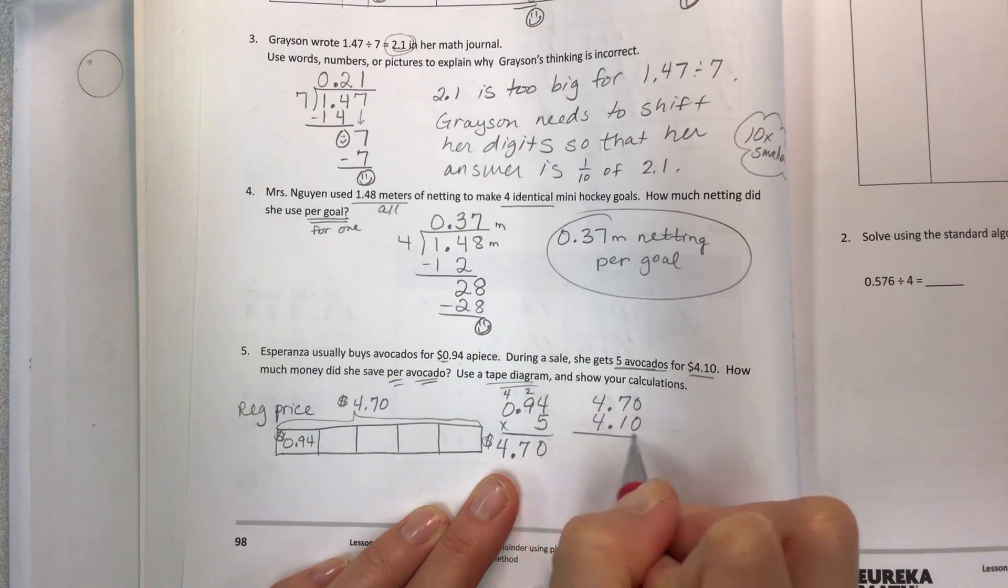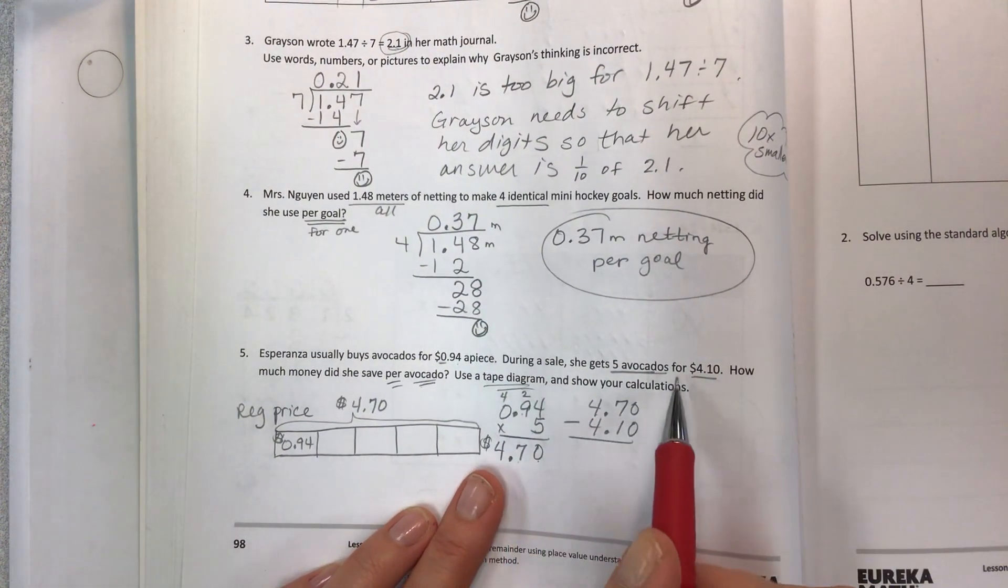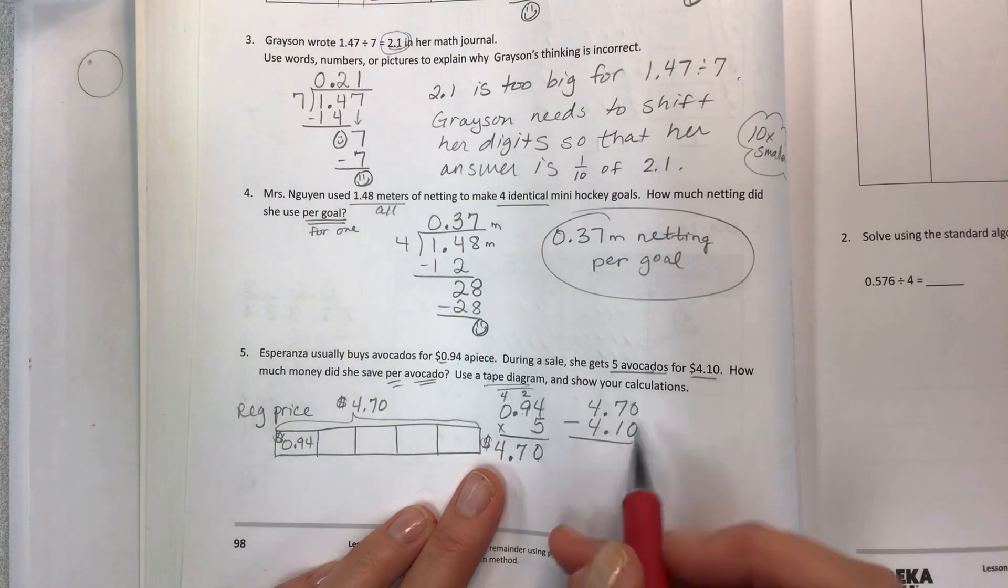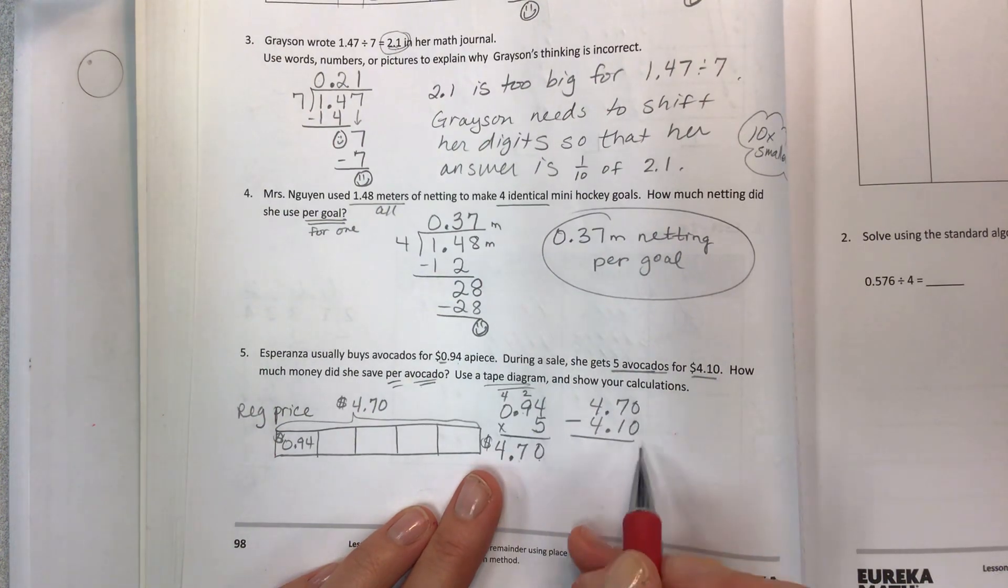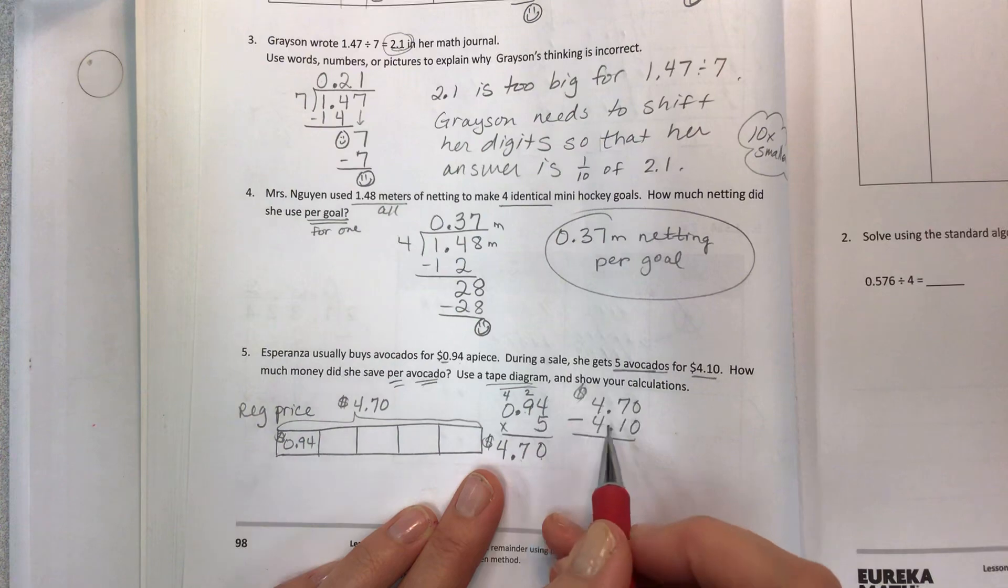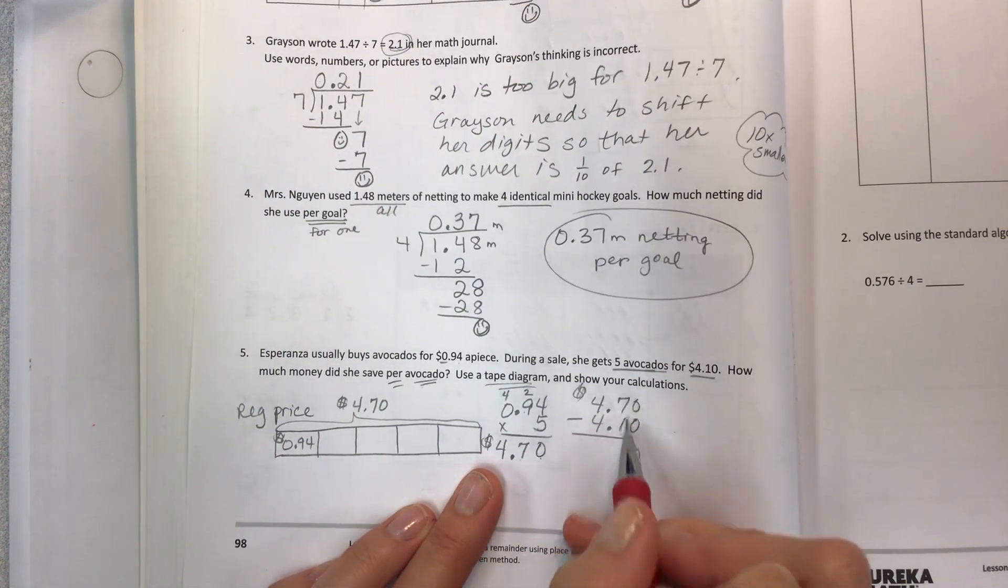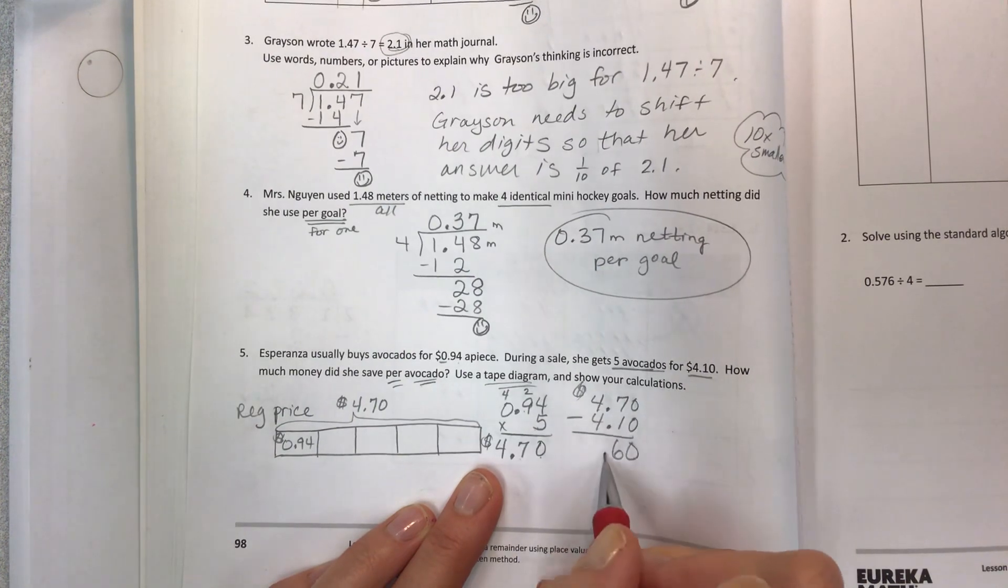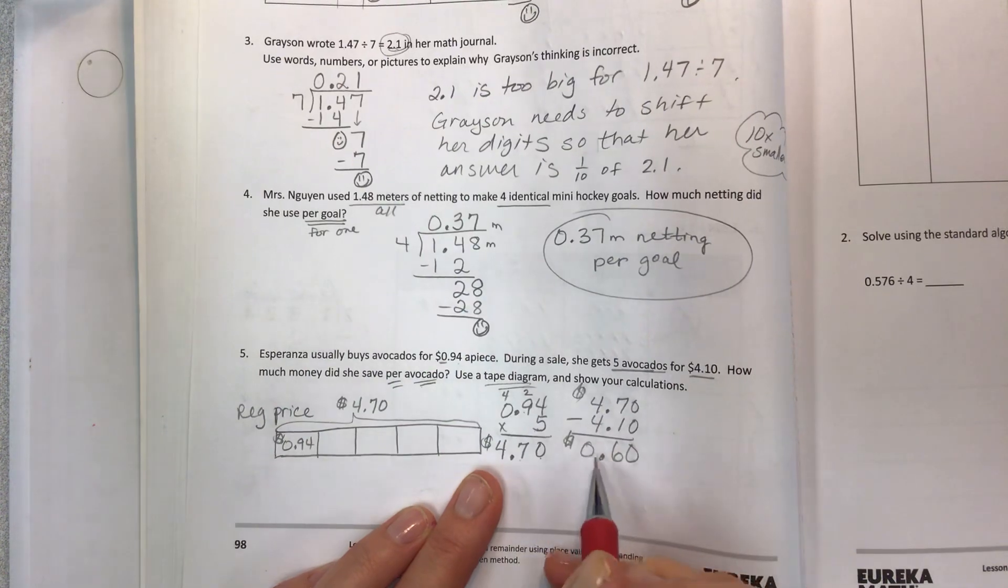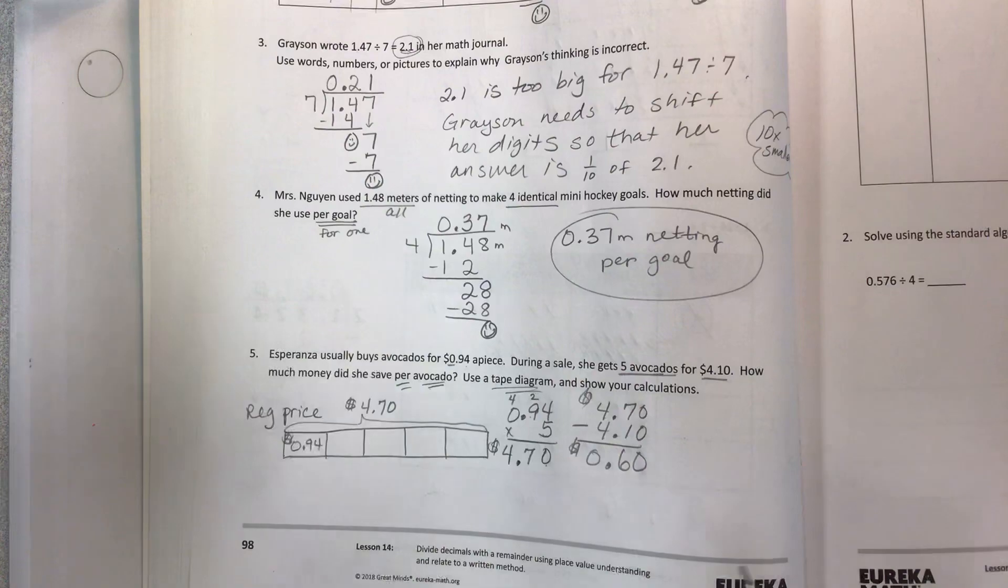So the usual cost is 470, and then now we've got five avocados for 410. So this is a savings. What is the difference between these two? Difference means subtraction. This is also money, so label it as such. Let's find the difference between these two. Zero minus zero is zero. Seven minus one is six. Decimal down. Four minus four, zero. And so 60 cents is the savings this time.